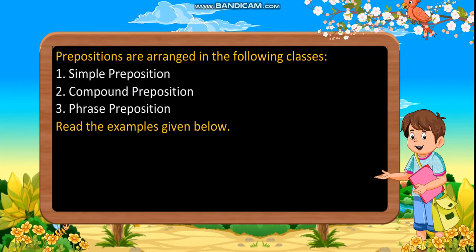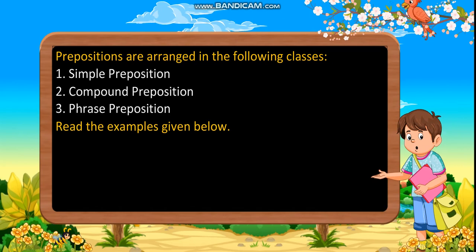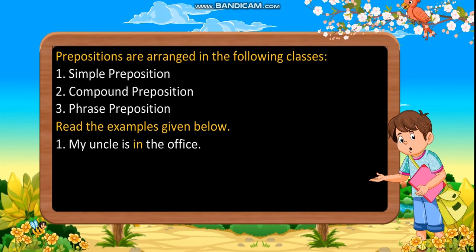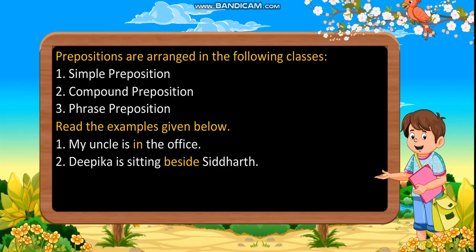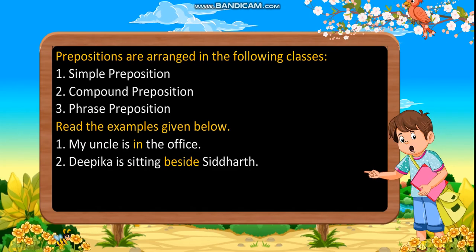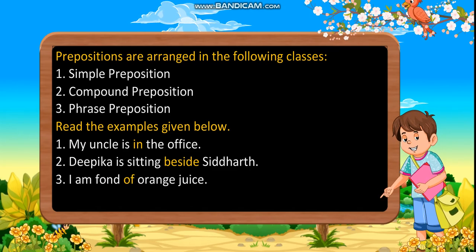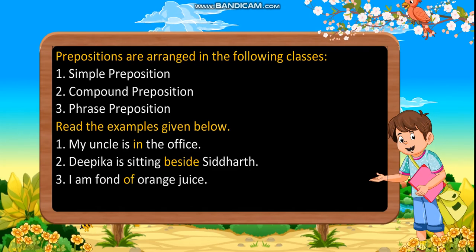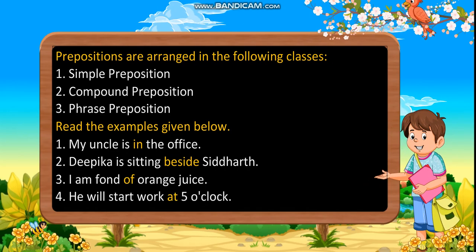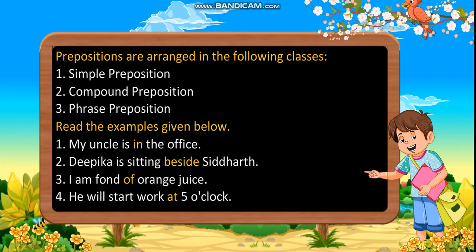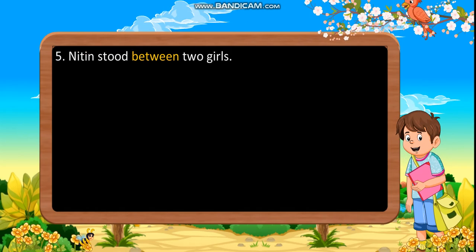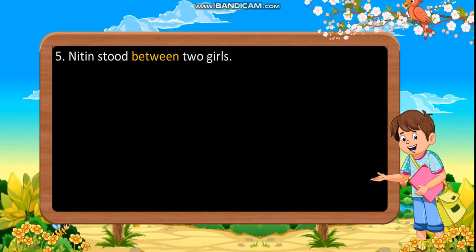Read the examples given below. My uncle is in the office. Deepika is sitting beside Siddhartha. I am fond of orange juice. He will start work at five o'clock. Nitin stood between two girls.